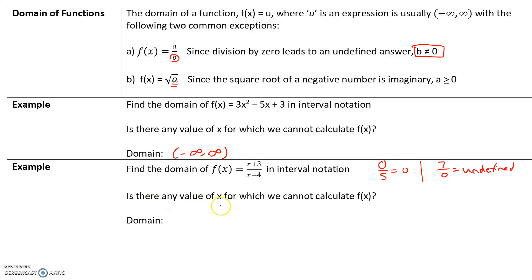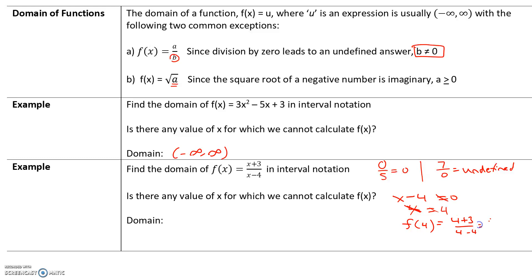Is there any value of x for which we cannot calculate f(x)? Yes. x minus 4 cannot equal 0, which means x cannot equal 4. What would happen if x was 4? f(4) would be 4 plus 3 divided by 4 minus 4, which is 7 over 0 — that's undefined. So x cannot be 4.